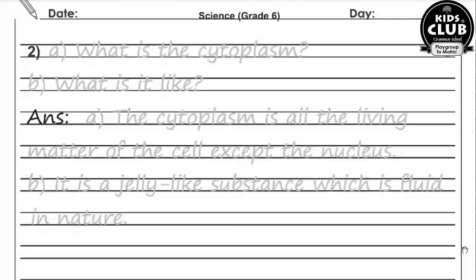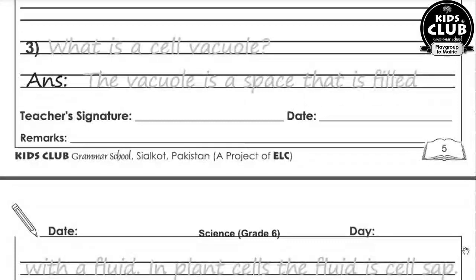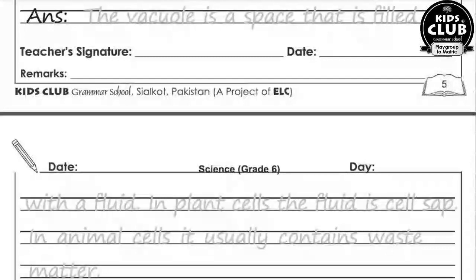Question number two: (a) What is cytoplasm? (b) What is it like? The cytoplasm is all the living matter of the cell except the nucleus. It is a jelly-like substance which is fluid in nature. Cytoplasm jelly-like substance hai jo animal cell aur plant cell dono mein paaya jata hai.